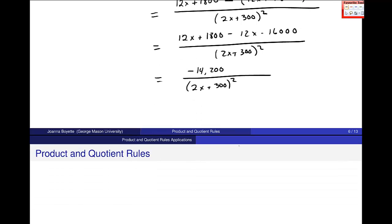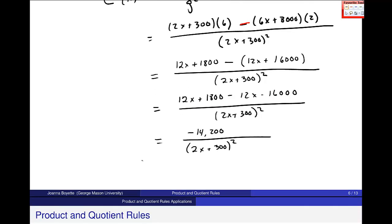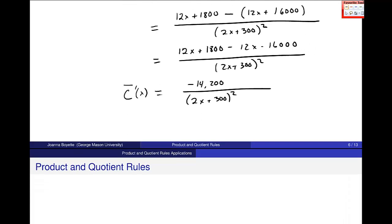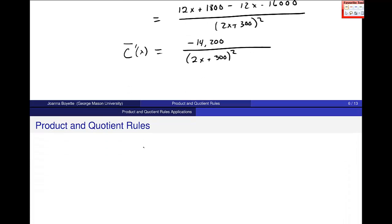Okay, and then I'm interested in what happens. So, and this is just average cost, the derivative of average cost, and I want to know what's happening at c prime of 280.